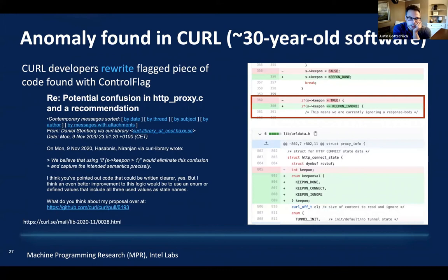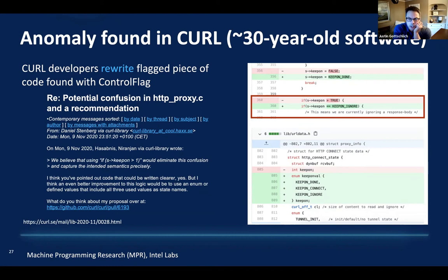In C/C++, the value associated with false is zero, and anything not zero is true. So what does it mean for something to be greater than true? This is very confusing. ControlFlag found this — and we don't program ControlFlag with any rules, it learns this stuff on the fly. We contacted the Curl team; they said yes, this is obfuscated code, this is not right, and this is probably going to lead to a bug. It's a byproduct that it works. They were misspecifying their intention — what they really meant to do is create an enum with different states, but they were hijacking the Boolean type system to force fit it into something it wasn't meant for.